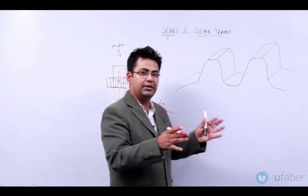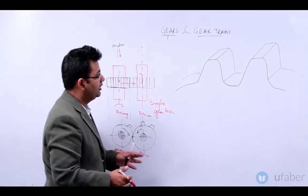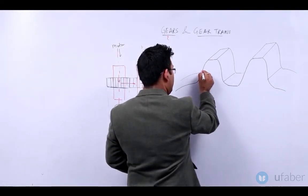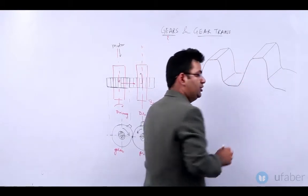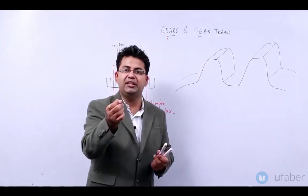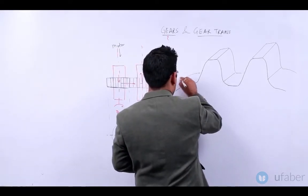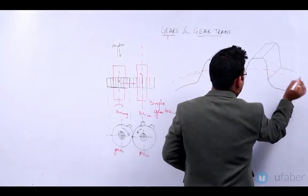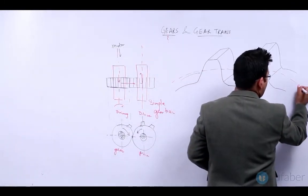Now let me come to this diagram and build it up. I have drawn two teeth on a gear — it can be a gear or a pinion. Let me put these points: these are pitch points. A pitch point is the point at which two teeth are meeting each other, are in contact with each other. If I draw the locus of these points, I will get a circle — an imaginary circle called the pitch circle.